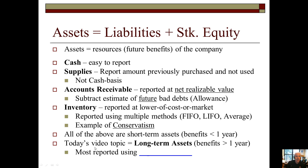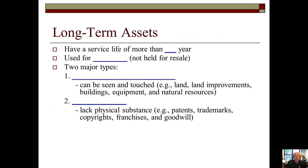All of the above assets — cash, supplies, accounts receivable, and inventory — are short-term assets where benefits are expected to be realized in less than one year from the balance sheet date. Today's topic deals with long-term assets, where benefits are expected to be derived greater than one year from the balance sheet date. Most are reported using depreciable cost, calculated as cost minus residual value.